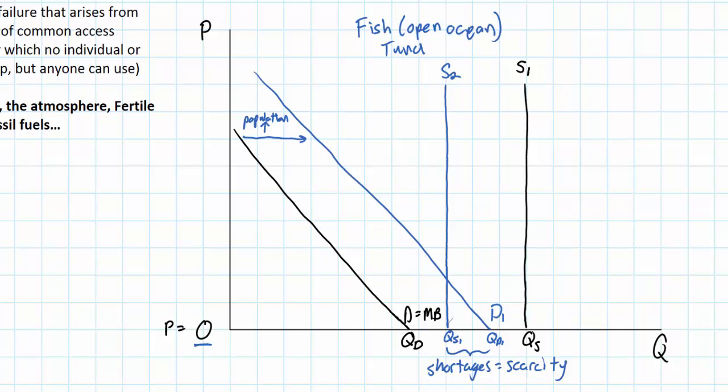Let's continue this logic. What happens if demand continues to grow due to growing populations? The demand curve will continue to shift out. That will be at D2. And not surprisingly, supply will continue to decrease due to the continued extraction of the resource from the sea.